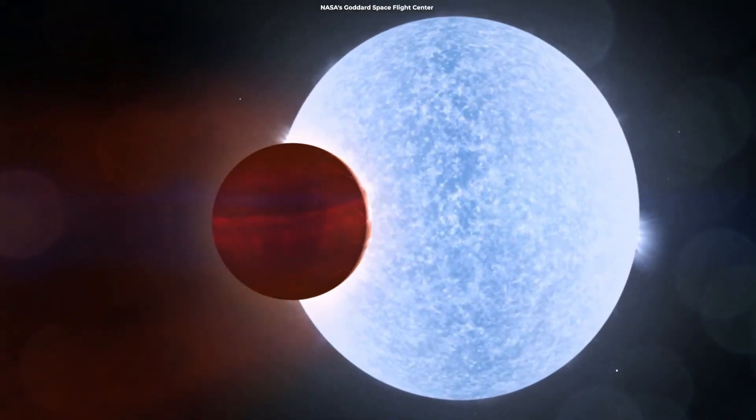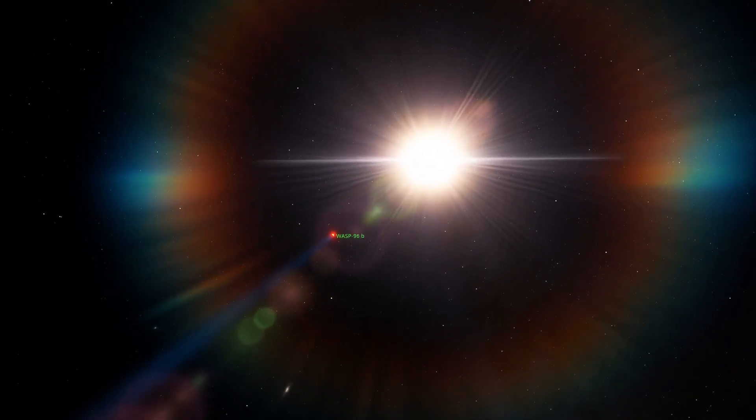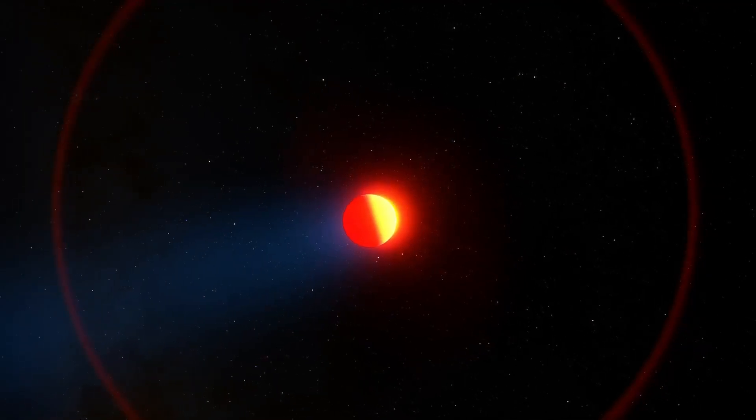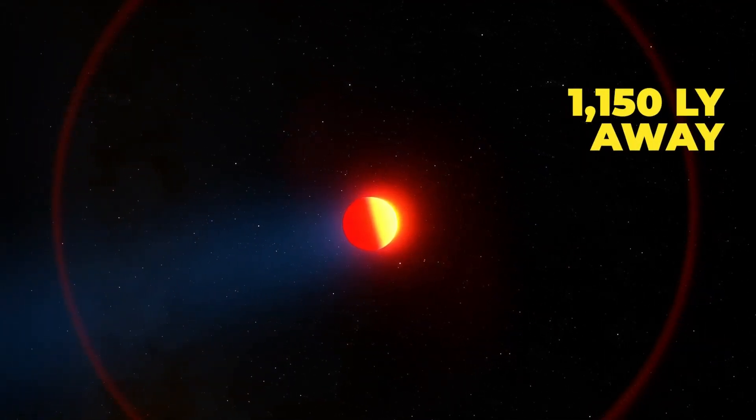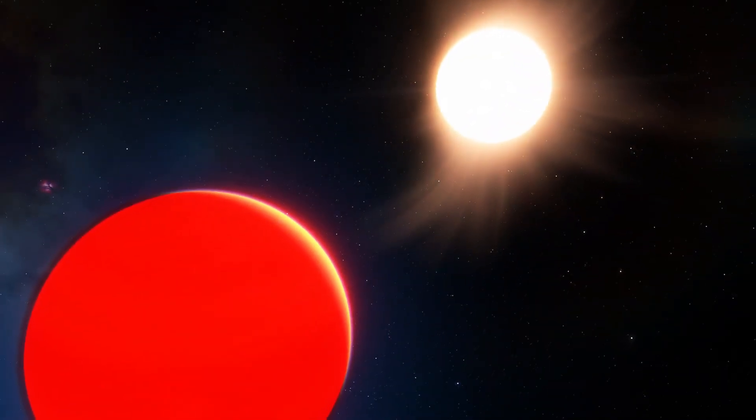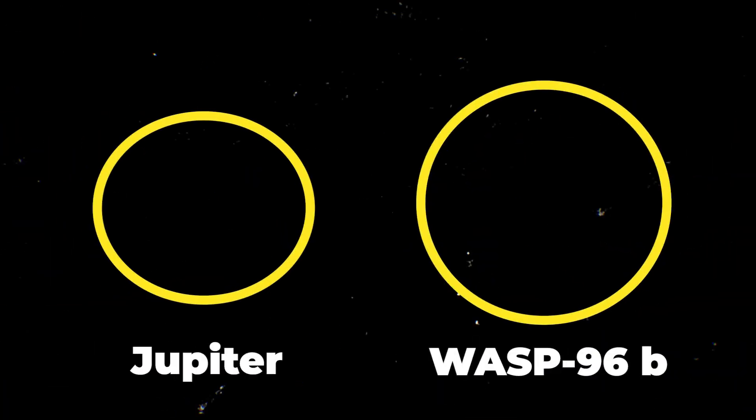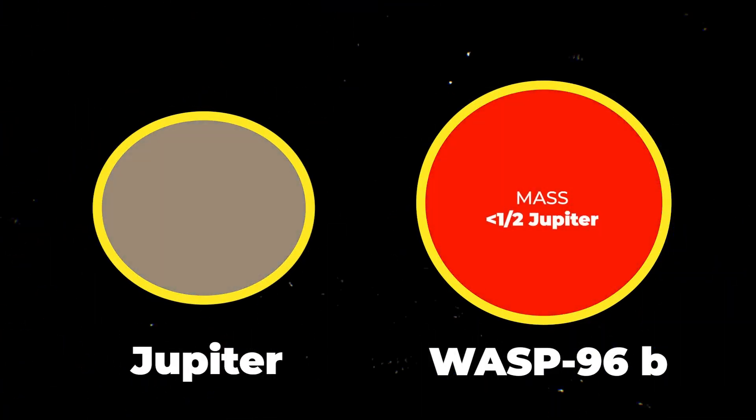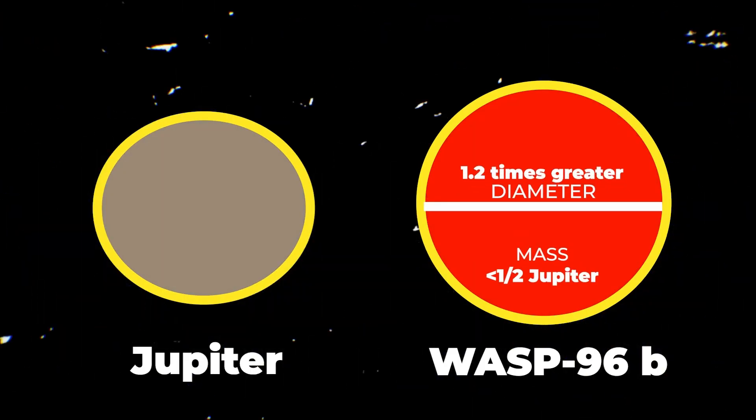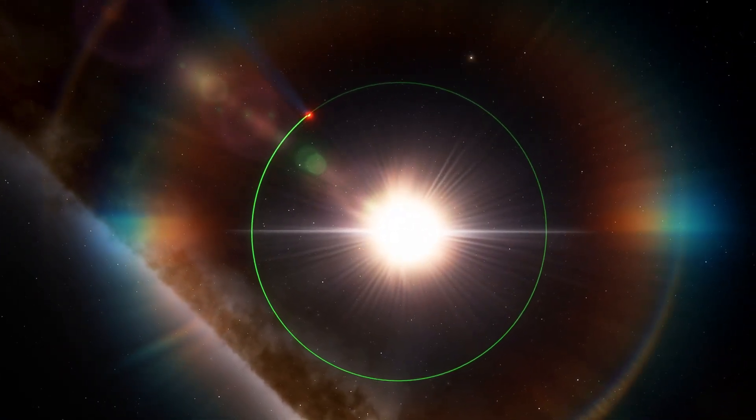WASP-96b is one of more than 5,000 confirmed exoplanets in the Milky Way, located roughly 1,150 light years away in the southern sky constellation Phoenix. It represents a type of gas giant that has no direct analogue in our solar system, with a mass less than half of Jupiter and a diameter 1.5 times greater.